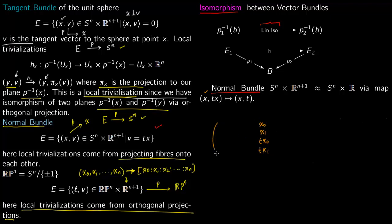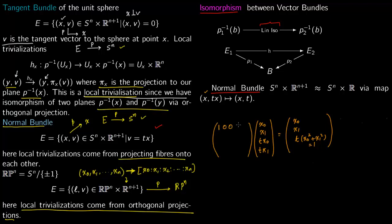You need to multiply by some matrix to go from (x_0, x_1, t·x_0, t·x_1) to (x_0, x_1, t). This is achievable because t·(x_0^2 + x_1^2) = t since X lies on the sphere so x_0^2 + x_1^2 = 1. You can write down an explicit matrix: for the t component you multiply by (x_0, x_1), giving a row (0, 0, x_0, x_1) in the matrix, which recovers t.